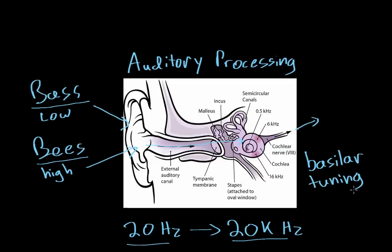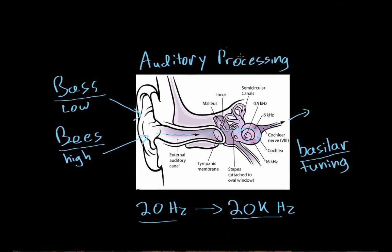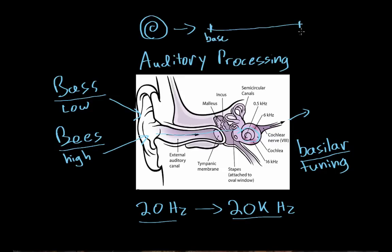The term basilar comes from the basilar membrane, which is inside the cochlea. Inside the cochlea there's actually a membrane that contains a bunch of hair cells. And if we were to unroll this cochlea — it's normally rolled up — so that it was flat, there are varying hair cells along it. This would be the very base of the cochlea, and this is the very apex.